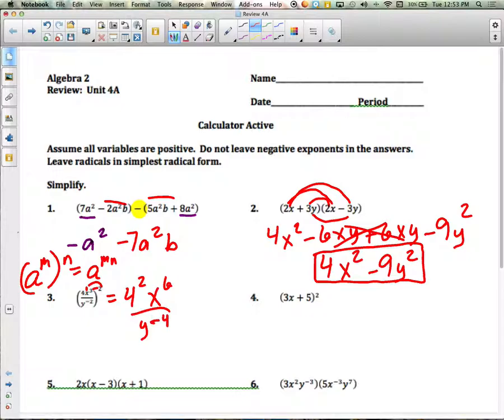So I've got 4 squared, which if we calculate that value, we're going to get 16. X to the sixth over y to the negative 4. And then we have this negative exponent. You cannot have a negative exponent in your final answer. So we're going to make that positive.